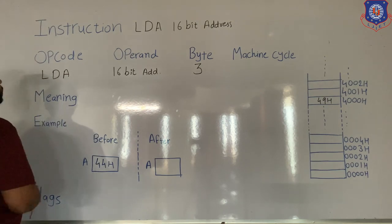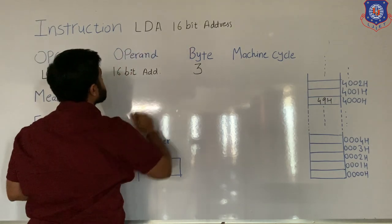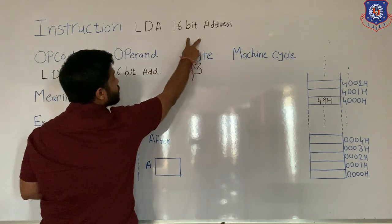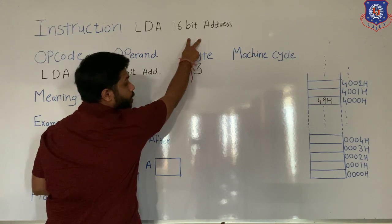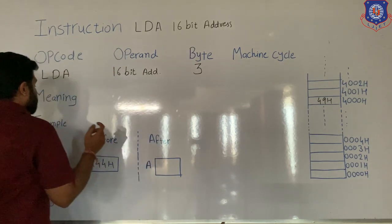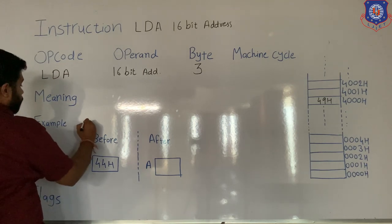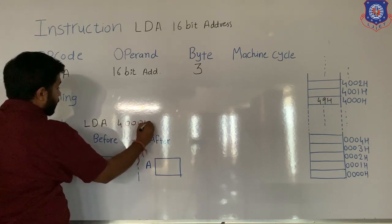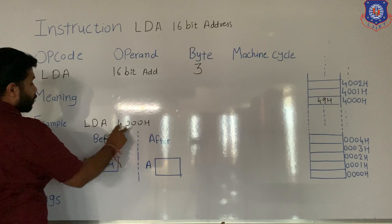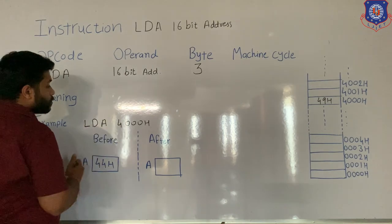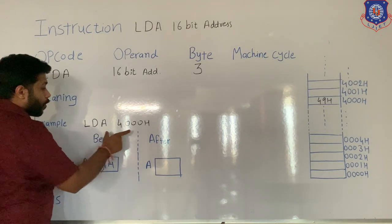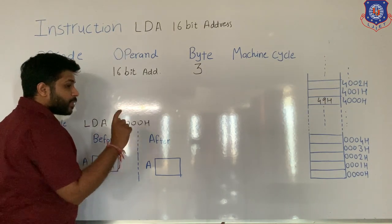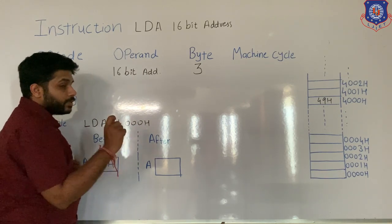Let's first see the meaning of the instruction. LDA 16-bit address means load data to accumulator from 16-bit address of memory location. For example, LDA 4000H means load data to accumulator from 4000H memory location. In the 4000H memory location, 8-bit data is stored.